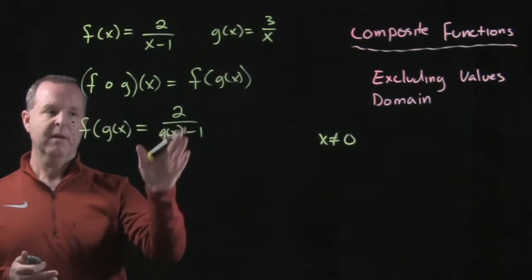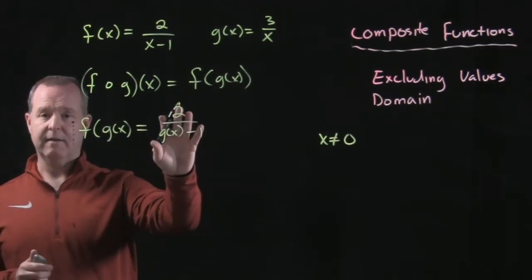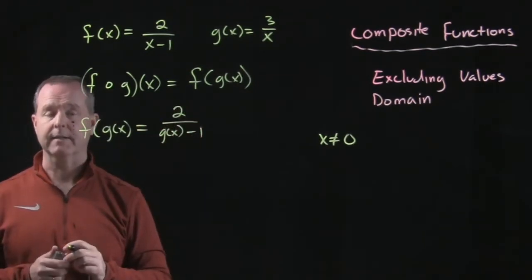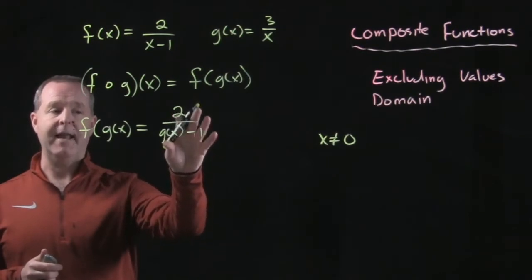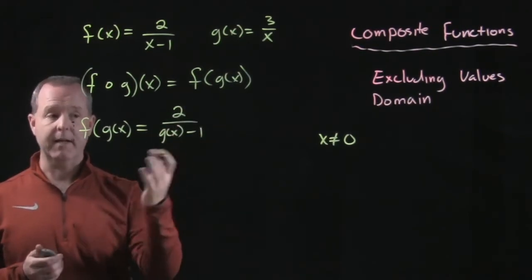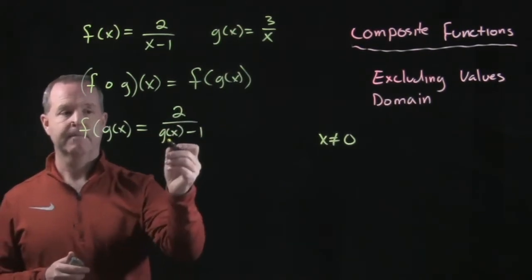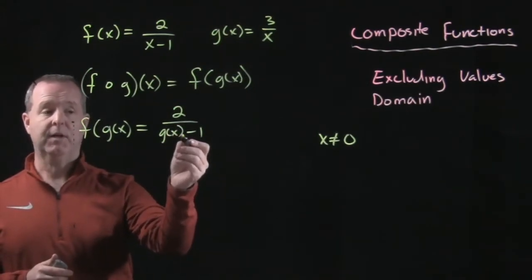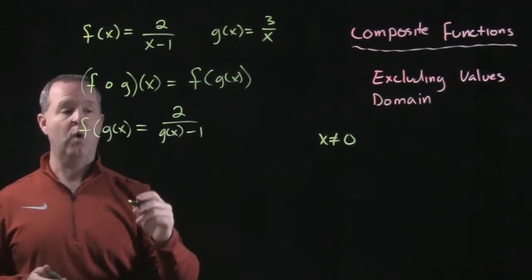In this particular case, we also have to make sure that this composite function is defined. And this is defined at all values such as the denominator here does not equal zero. It becomes zero when g of x equals one.